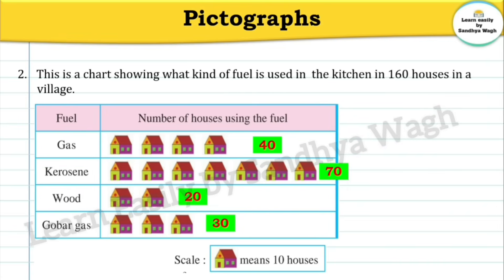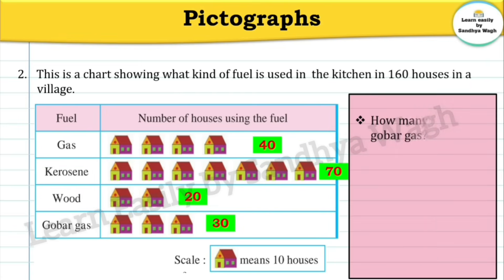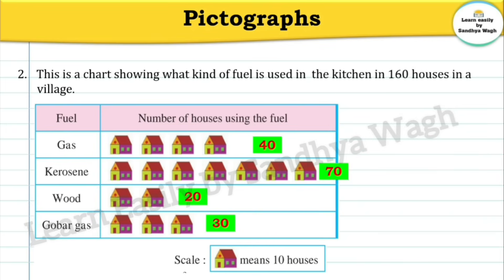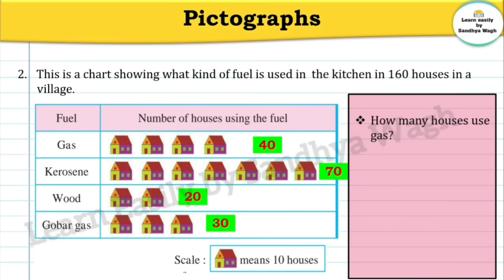Next question: How many houses use gobar gas? The answer is 30 houses use gobar gas. Next: How many houses use gas? Gas is used in 40 houses. So our answer will be: 40 houses use gas.